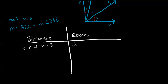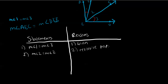We start by writing what we've been given. Statement 1: measure of angle 1 equals measure of angle 3 — reason: given. Statement 2: measure of angle 2 equals measure of angle 2 — reason: reflexive property of equality. Statement 3: measure of angle 1 plus measure of angle 2 equals measure of angle 3 plus measure of angle 2, because angles 1 and 3 are equal — reason: addition property of equality.